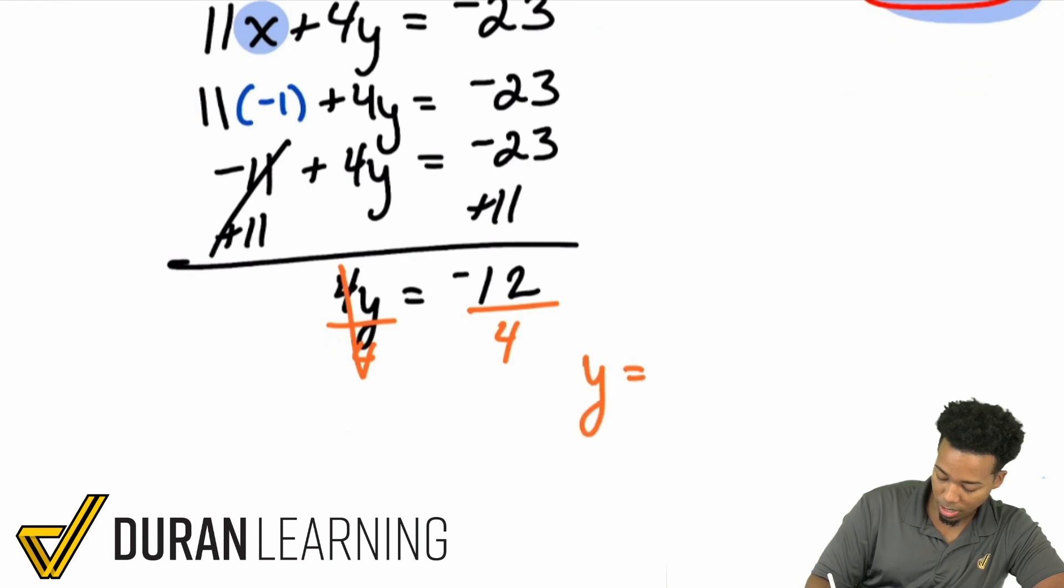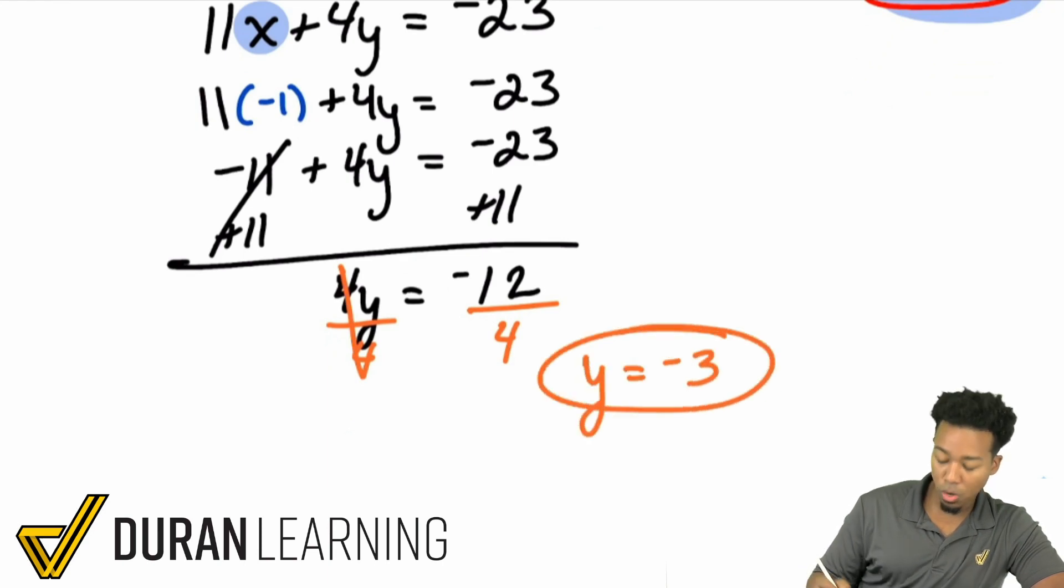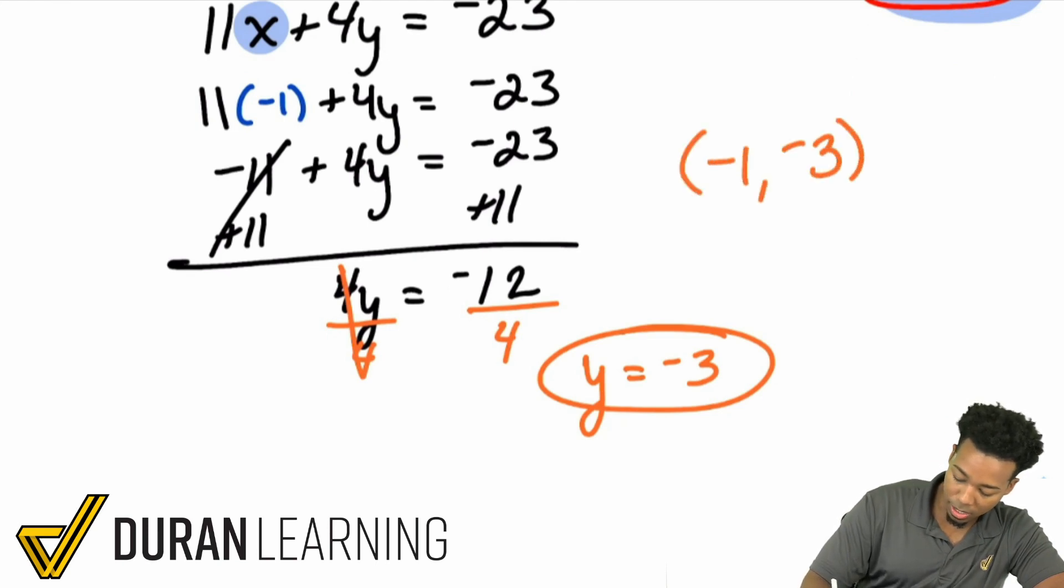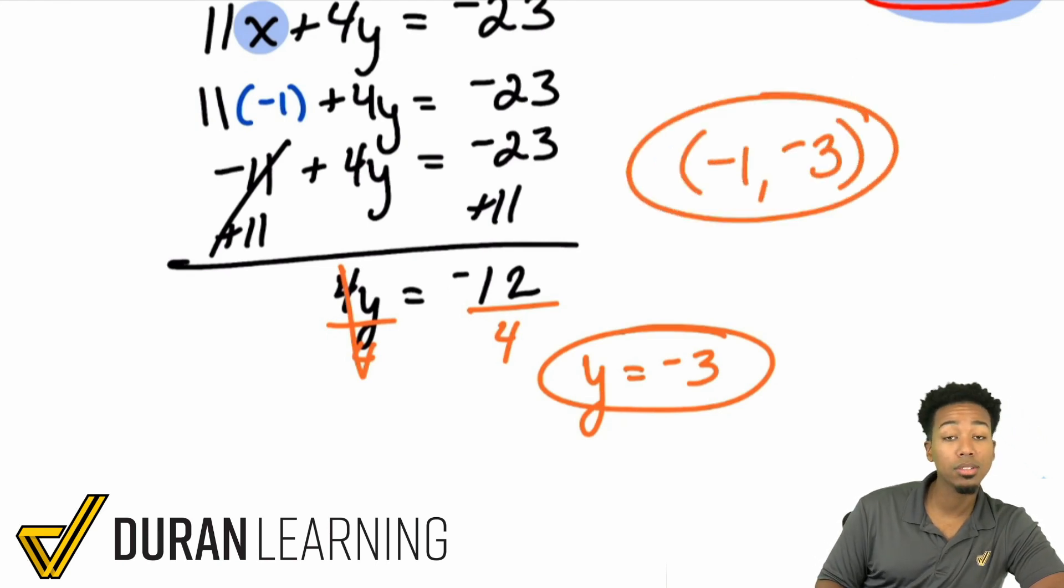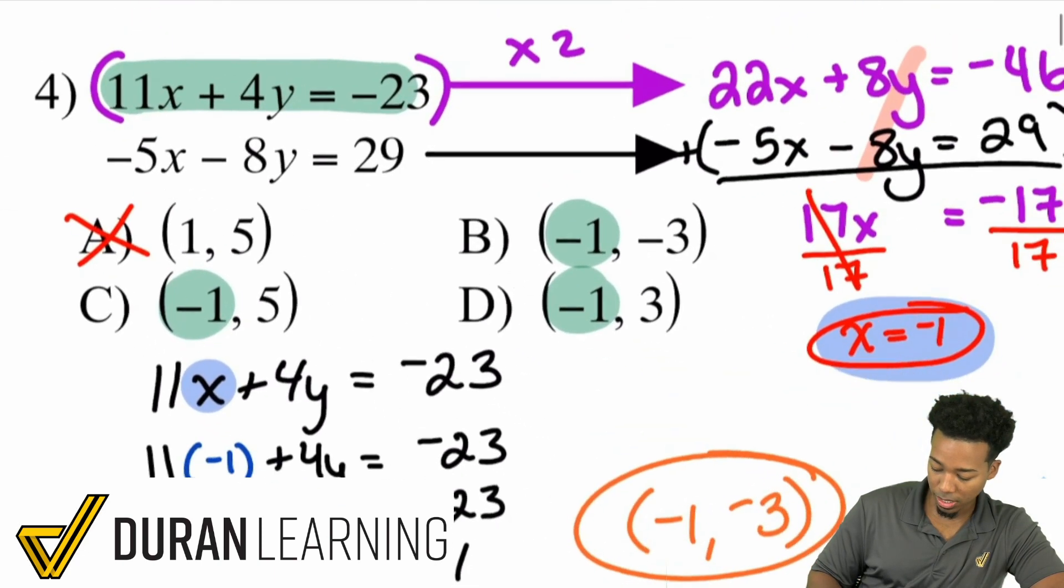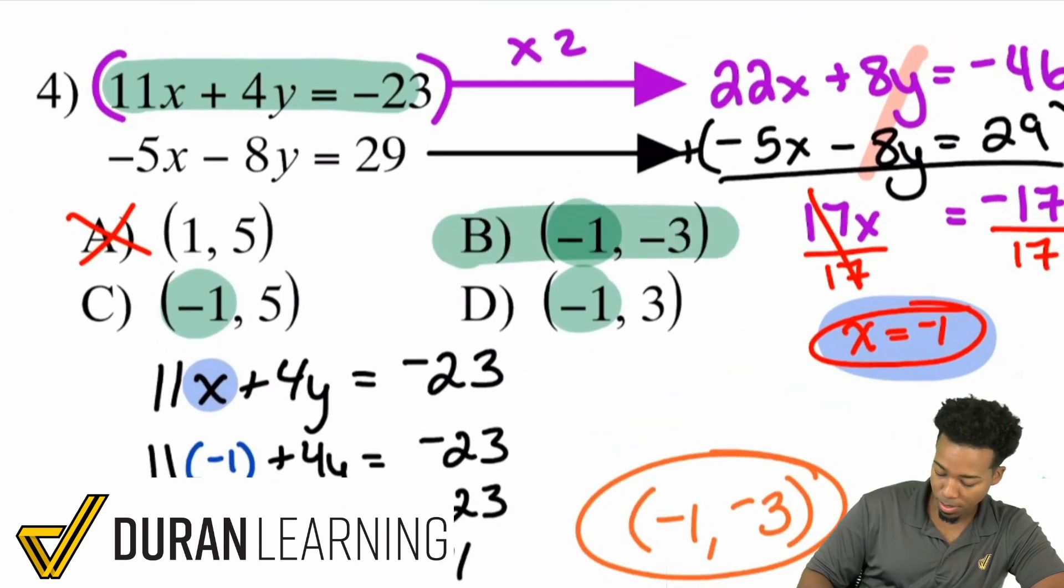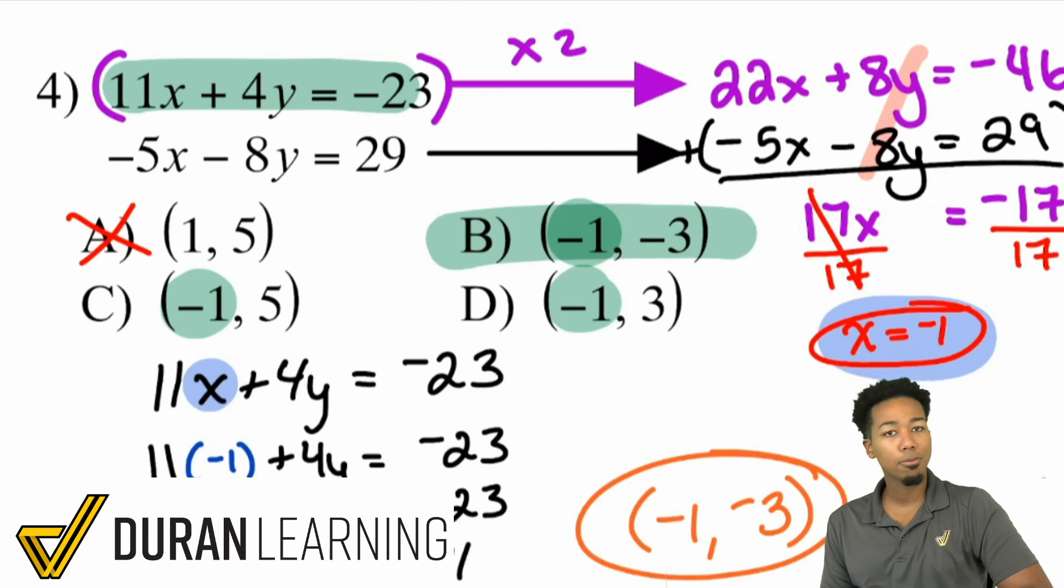I get myself y equals negative 3. So we had x equals negative 1 and y equals negative 3. So that is my answer, negative 1, negative 3. And if I look at this, that's going to be answer B. All the way through. And there it is, my math party people.